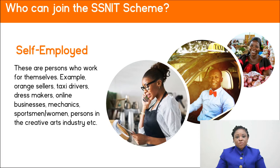These are persons who work for themselves. Examples include: orange sellers, taxi, boat, and Uber drivers, dressmakers, fashion designers, online businesses, mechanics, sportsmen and women, and persons in the creative industry — all of whom can be classified as self-employed and can join the scheme as voluntary contributors.